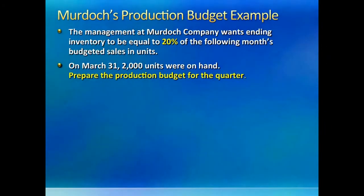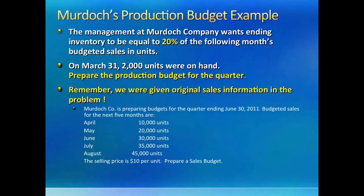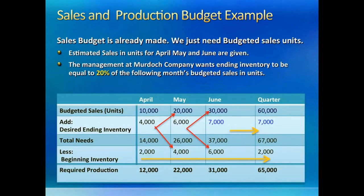For the Murdoch company, we are given additional information about desired ending inventory and beginning inventory for the quarter. We need two things to make a production budget: budgeted sales and desired ending inventory. The sales information from before is copied down for reference. We start with sales needs for each month and add desired ending inventory, which is supposed to be 20% of next month's budgeted sales units. For example, 4,000 is 20% of 20,000, and 6,000 is 20% of 30,000 — the next month's budgeted sales.